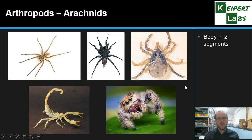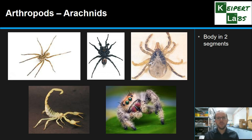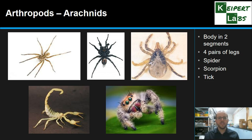Arachnids — like spiders, ticks, and scorpions — have a body in two segments, a combination of the head and thorax, and then an abdomen. They also have four pairs of legs, or eight legs altogether. Spiders, scorpions, and ticks are all examples of arachnids that we might encounter.